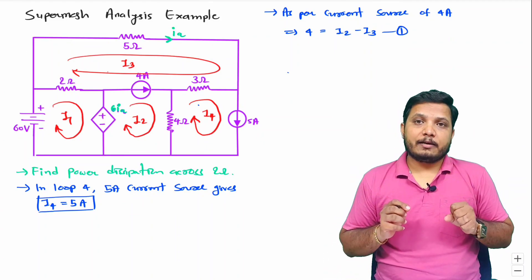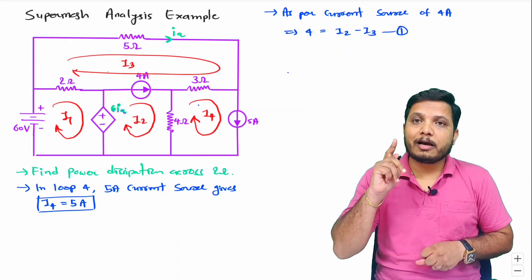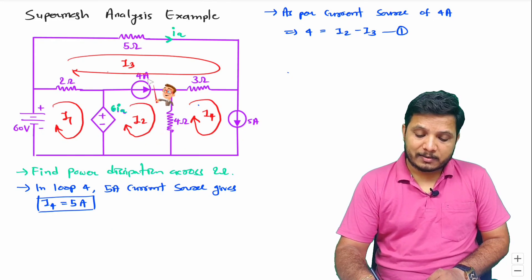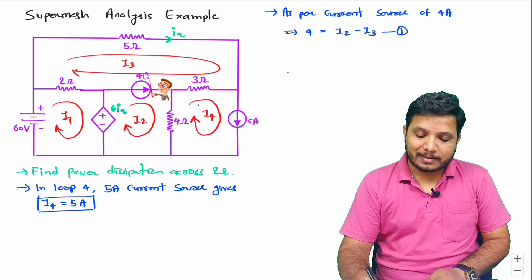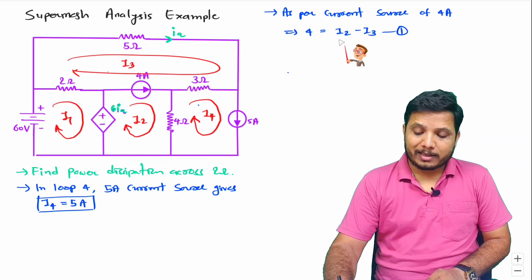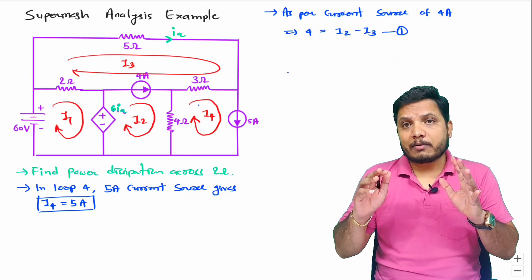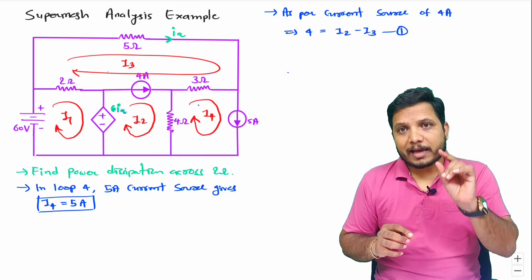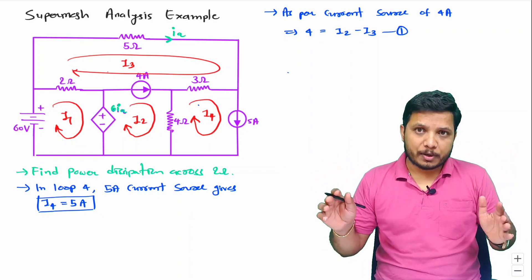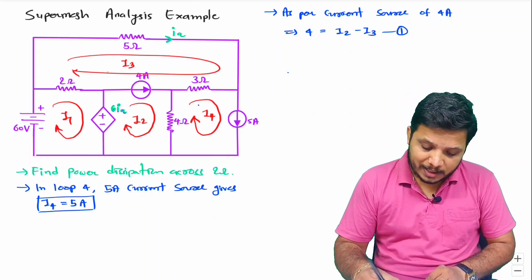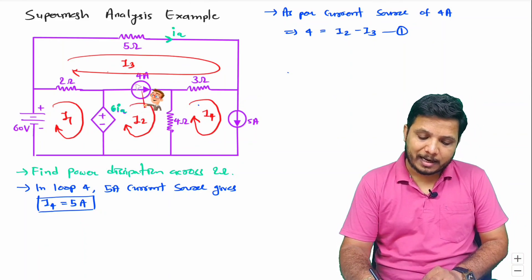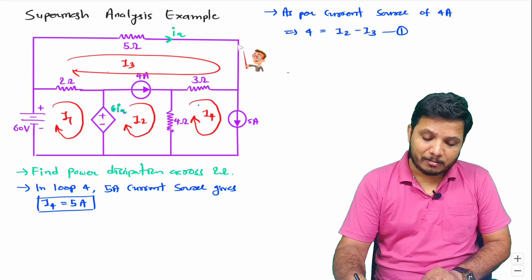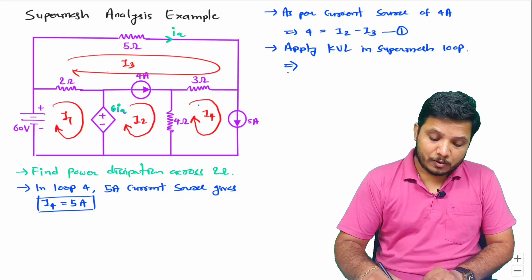Whenever you see any circuit and apply mesh analysis, first you will have to resolve current sources. The 5-ampere current in loop four gives I4 equals 5, and this 4-ampere current source gives I2 minus I3. Now, once you consider all current sources, you make them open circuit and consider a super mesh loop — a bigger loop — to which you apply KVL. So now I'll be considering this 4-ampere current source as open circuit and considering this bigger loop — that is my super mesh loop.